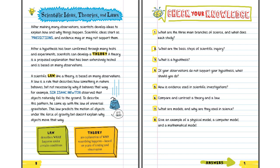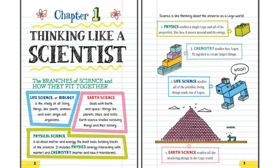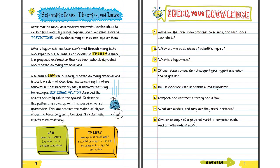Check your knowledge. What are the three main branches of science and what does each study? We'll need to go back. Let's check out page two. Here they are. The branches of science and how they fit together. So we're looking at life science or biology, Earth science, and physical science. Life science studies living things. Earth science deals with Earth and space, things like planets, stars, and rocks. And physical science is all about matter and energy.